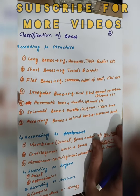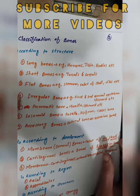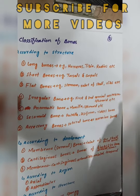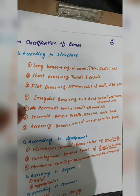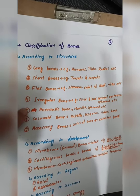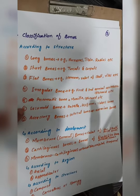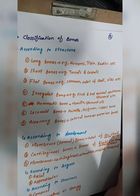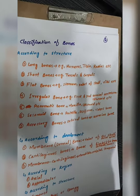Irregular bones have no specific shape. Examples include the bones of the spine, which are irregular bones. Another type is pneumatic bones, which contain sinuses — air-filled cavities. Examples of pneumatic bones include the maxilla and the sphenoid bone. These bones contain sinusoidal fluid-filled cavities.